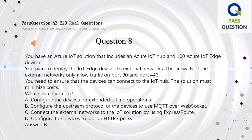Question 8. You have an Azure IoT solution that includes an Azure IoT Hub and 100 Azure IoT Edge devices. You plan to deploy the IoT Edge devices to external networks. The firewalls of the external networks only allow traffic on port 80 and port 443. You need to ensure that the devices can connect to the IoT Hub. The solution must minimize costs. What should you do? A. Configure the devices for extended offline operations. B. Configure the upstream protocol of the devices to use MQTT over WebSocket. C. Connect the external networks to the IoT solution by using ExpressRoute. D. Configure the devices to use an HTTPS proxy. Answer: B.